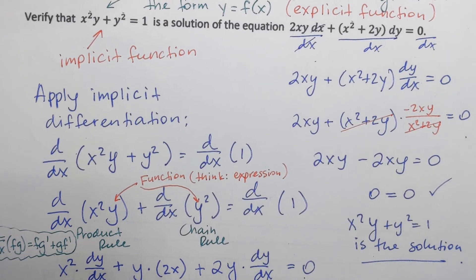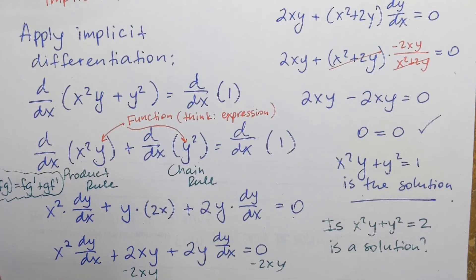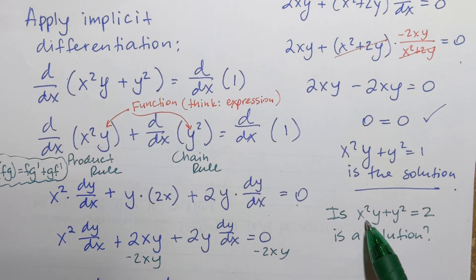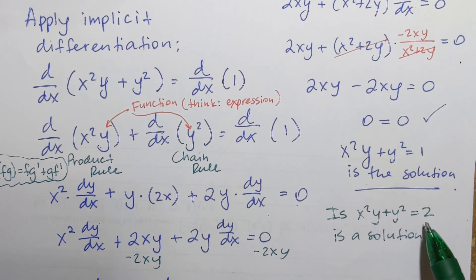This example specifically shows what you do when the function is given in implicit form and it's hard to convert it to explicit form for finding derivatives: use implicit differentiation. Now I want to ask a follow-up question. How about the different function x squared y plus y squared equals 2? Is that a solution?